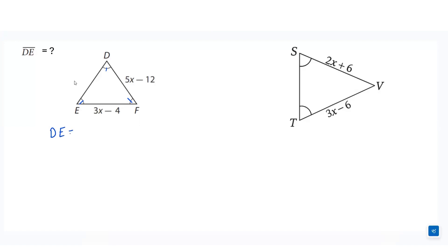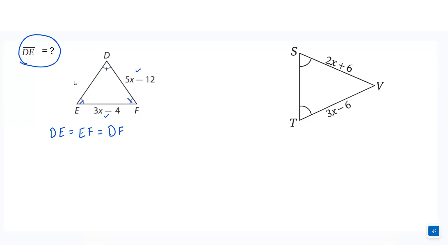That means DE should be equal to EF, which should be equal to DF. Now we want to find out the value of DE. We will use the side lengths already given in the question. According to the question, EF equals DF. So we write EF equals 3x minus 4 and DF equals 5x minus 12. Now after this, it's a linear equation.